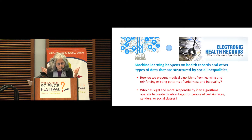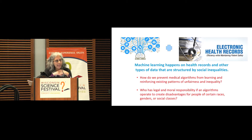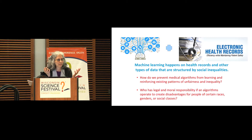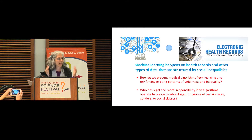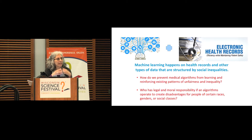How do we prevent medical algorithms from learning and reinforcing existing patterns of unfairness and inequality? And if they do learn existing patterns of unfairness and inequality, who is responsible for that? When people make biased judgments, we have laws that hold them accountable and we hold them morally accountable. But it's not so clear when an algorithm is making biased judgments — first of all, we have to know that it's making biased judgments.